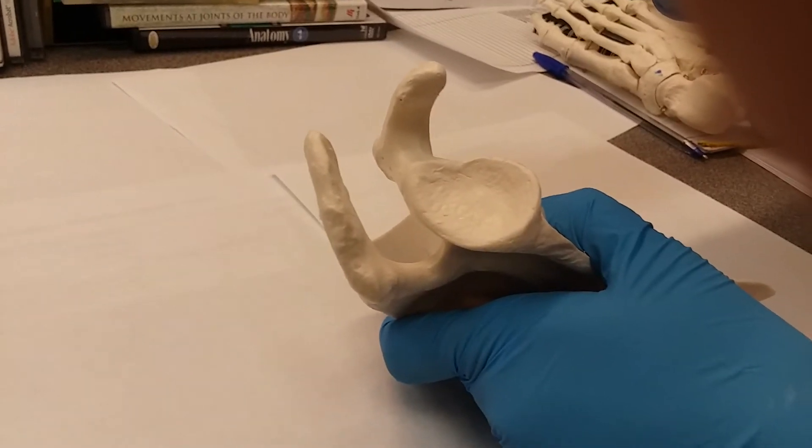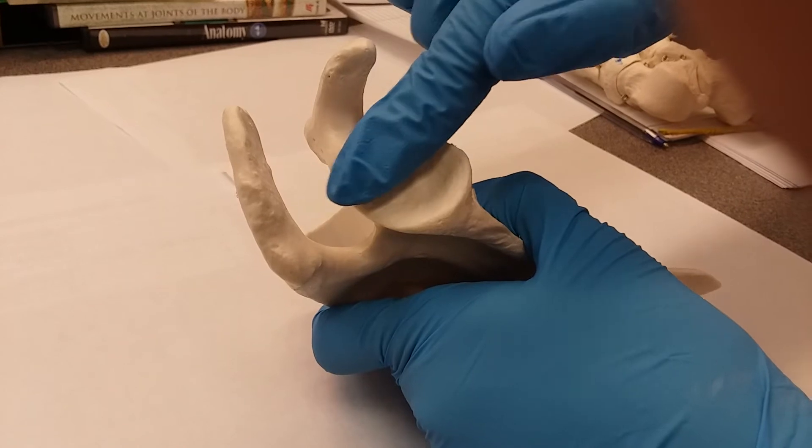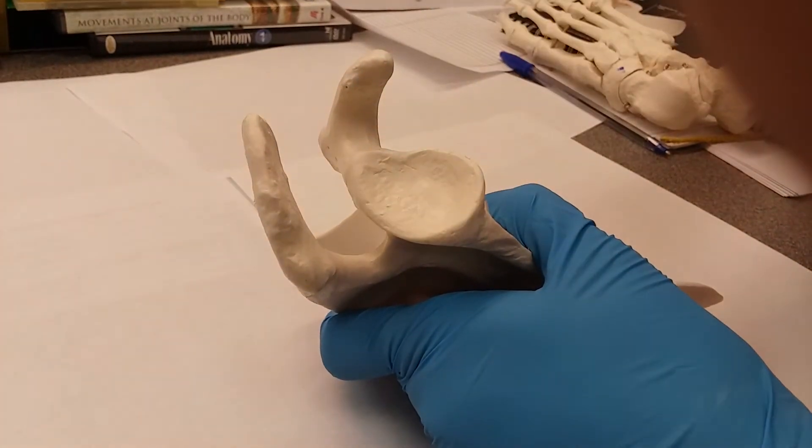Then you have your glenoid cavity or fossa. It's this depression where the humerus rests or articulates.